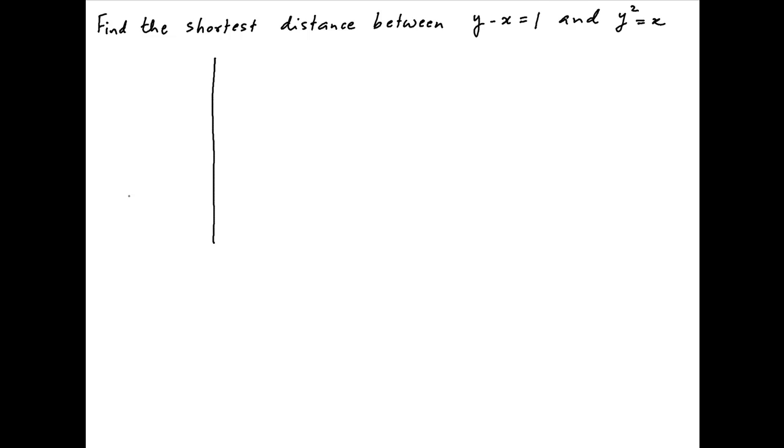We begin by plotting these two curves on the Cartesian plane. The curve y squared equals x is a parabola with the vertex at origin and symmetric about the x-axis. And the line y minus x equals 1, or y equals x plus 1, is a positively sloped line passing through the points (0,1) and (-1,0).